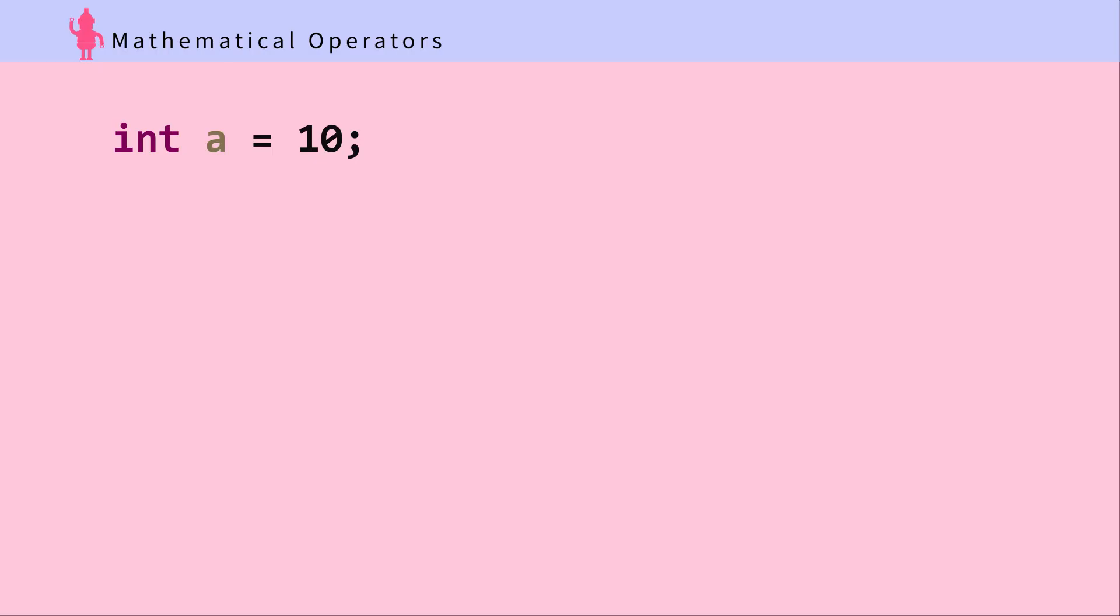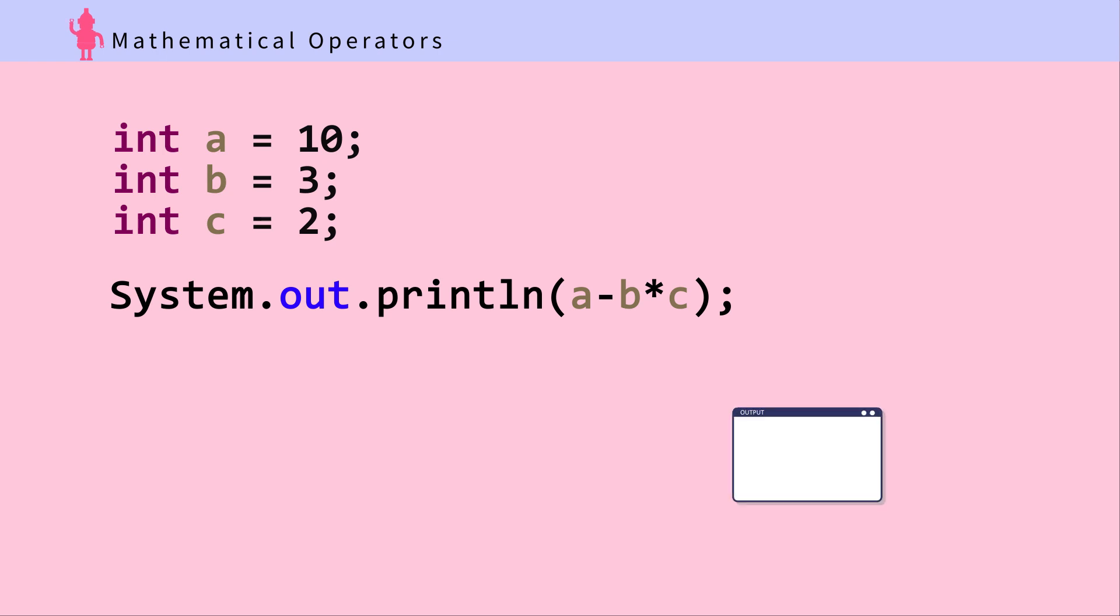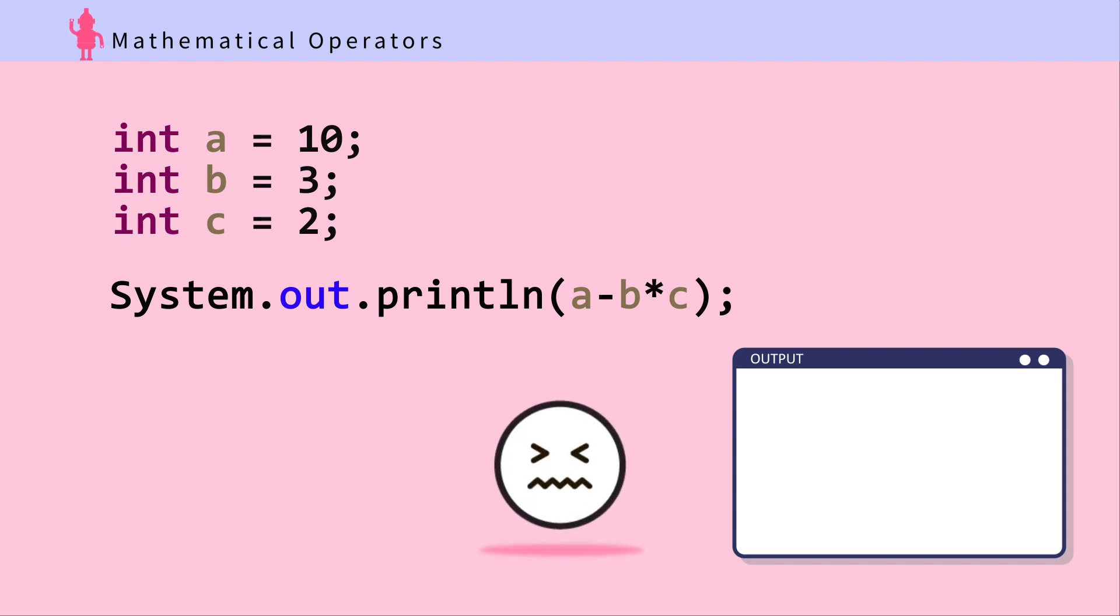Question: Integer A is 10, Integer B is 3, Integer C is 2. System.out.println A minus B times C. What is the output? If you thought the answer is 14, think again. The answer is 4. This works in the order of operations. B times C subtracted from A gives you 4.